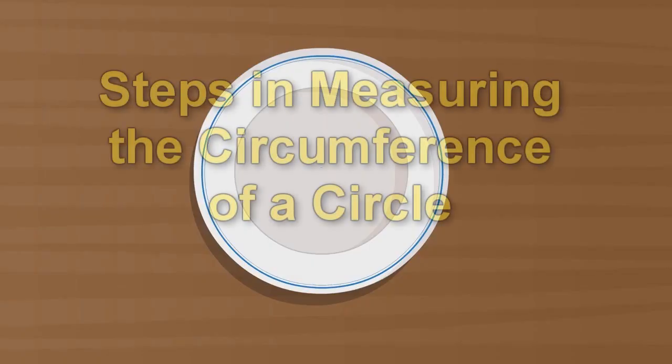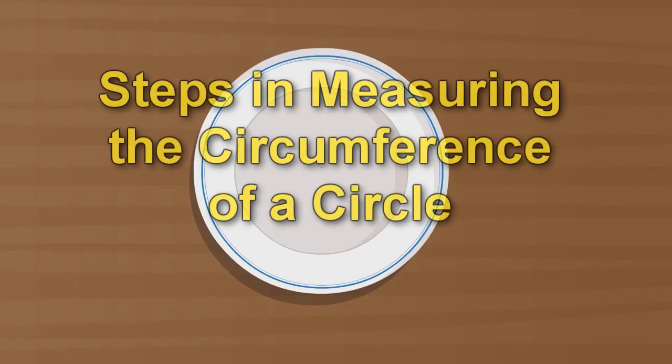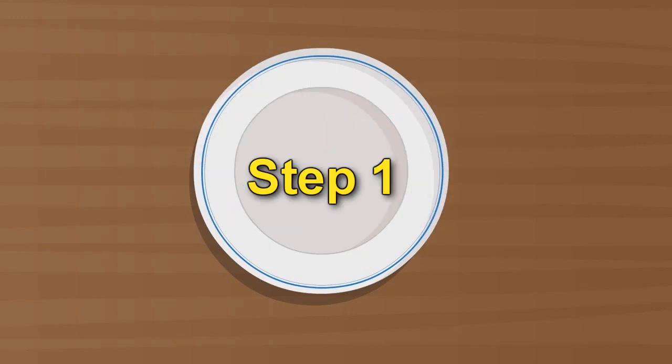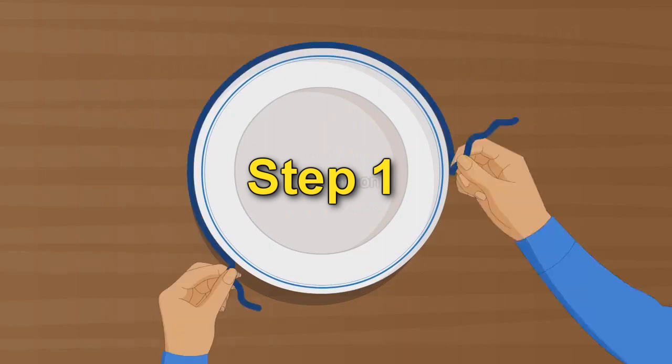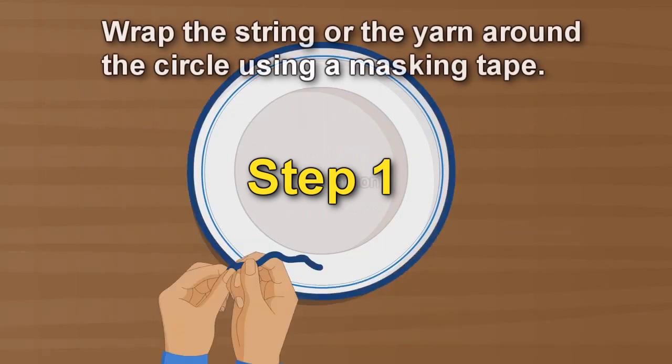These are the steps in measuring the circumference of a circle. Step 1: Wrap the string or the yarn around the circle using masking tape.